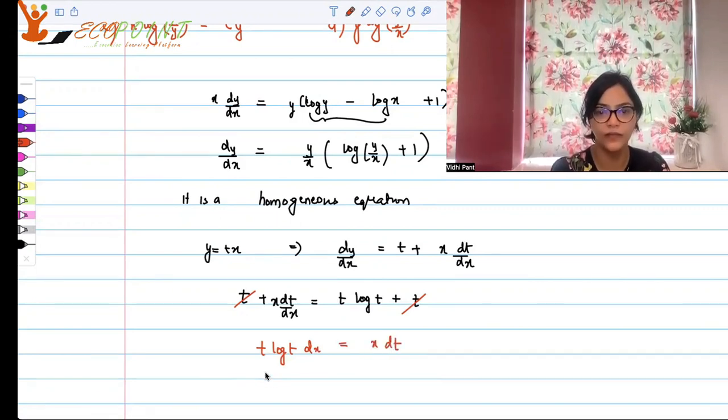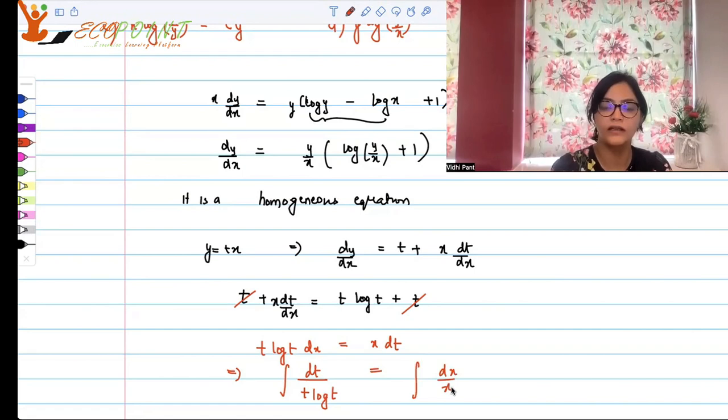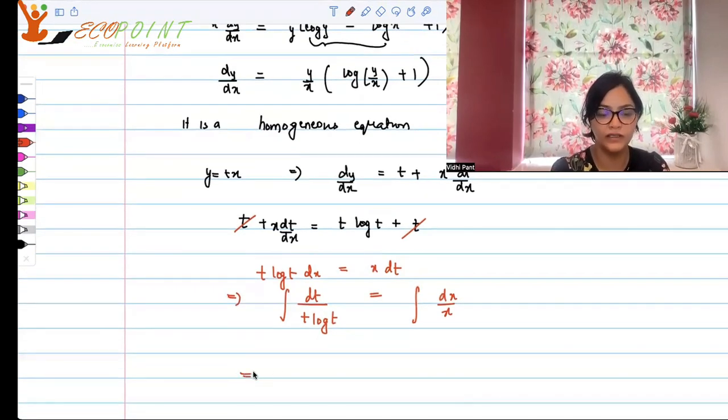Which is the same as if you integrate, equality will persist. So integrating, you get dt upon t log t is equal to integral dx upon x, and solving it, integrating on both sides, log t is equal to log x plus log c.